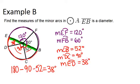If we wanted to check our work, we could verify that all of the arc measurements add up to 360 degrees, since the whole circle equals 360 altogether.